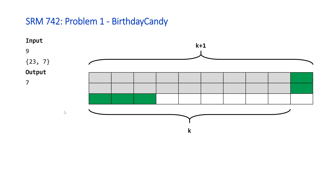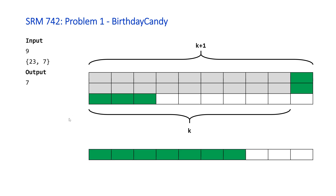We can calculate the number of candies Eliza receives using integer division: total candies divided by K+1. That erases the remainder since integer division rounds down. Then to get the remainder Eliza also keeps, we use the modulus operation. So for 23 candies: 23÷10=2 and 23%10=3, giving 2+3=5. For 7 candies: integer division gives 0 and modulus gives 7. We calculate this for every bag and take the maximum.